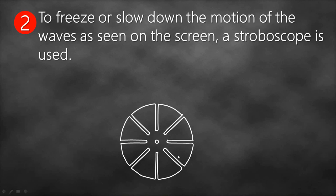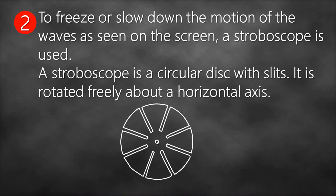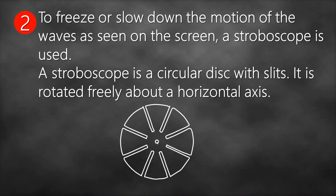A stroboscope is a circular disk with slits, and it's rotated freely about a horizontal axis. You make a circular disk, put slits in it, and fix it on a certain horizontal axis — maybe using a nail — and then you can rotate it.